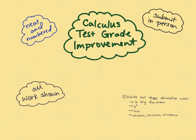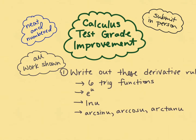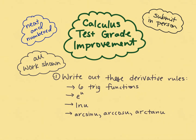Here is problem number one. You need to write out the derivative rules for the six trig functions, e to the u, the natural log of u, and these three inverse trig function derivative rules.